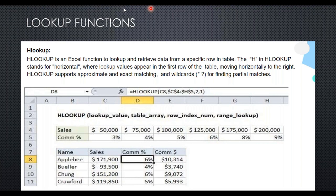The sales row is indicated as one and we move to position two to get the commission percentage. In HLOOKUP the row is considered as number one and you move to the second position vertically downward — similarly to how in VLOOKUP you move right through columns.